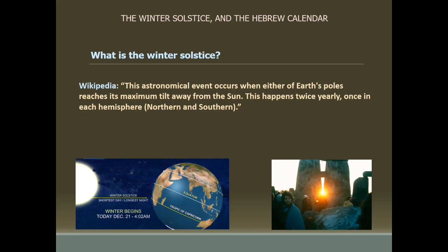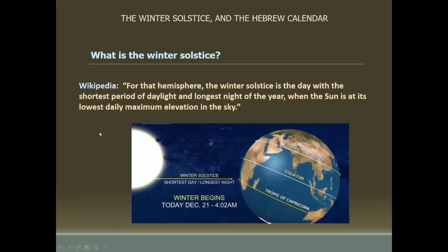The picture on the right-hand side may be from Stonehenge. Those two pillars were strategically placed by the ancients — you can see the rising sun exactly in the center of those two pillars. Continuing with the definition: the winter solstice is the day with the shortest period of daylight and the longest night of the year, when the sun is at its lowest daily maximum elevation in the sky. That happened to be this very day, earlier today.